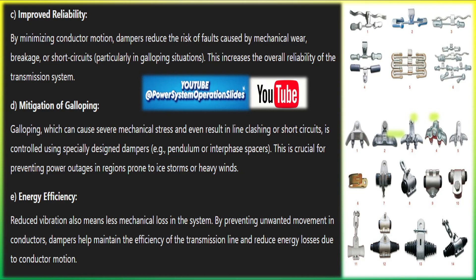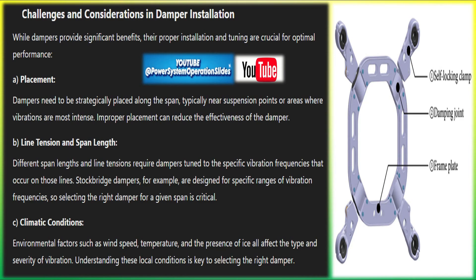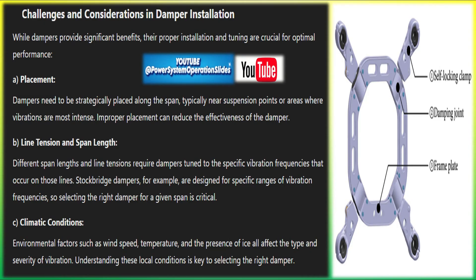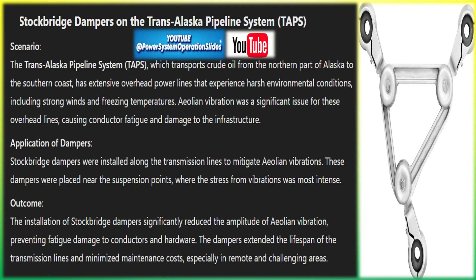The proper application of dampers in transmission lines is critical to maintaining the reliability and longevity of the infrastructure. Prevention of fatigue damage: Aeolian vibrations cause repeated bending and stress concentration at suspension points, clamps, and hardware attachments. Over time, these repeated stresses lead to fatigue damage in conductors, causing broken strands or hardware failures. Dampers significantly reduce this risk by controlling vibration.